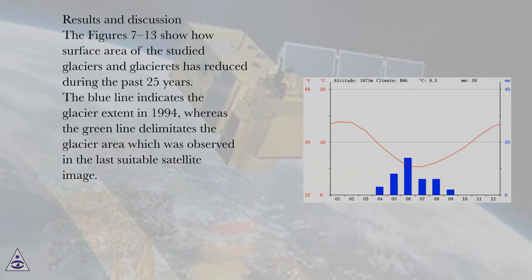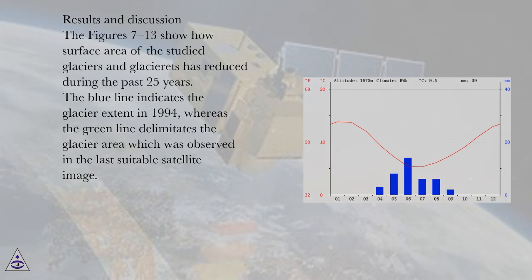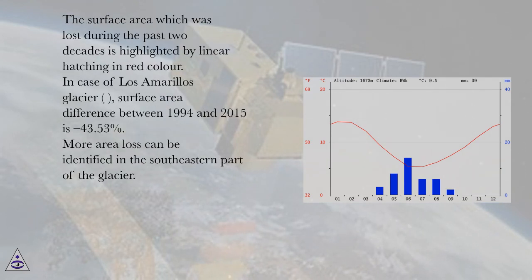The figures 7–13 show how the surface area of the study glaciers has reduced during the past 25 years. The blue line indicates the glacier extent in 1994, whereas the green line delimits the glacier area observed in the last suitable satellite image. The surface area lost during the past two decades is highlighted by linear hatching in red color.